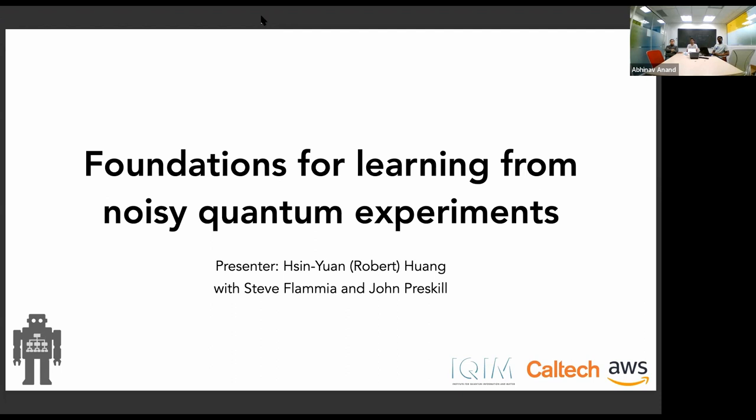Robert is currently a PhD student at Caltech, working with John Preskill and Thomas Liddick. His research focuses on understanding how theory of learning can provide new insights into information and quantum computing. Some of his recent work includes understanding classical shadow tomography for large-scale quantum systems and efficient machine learning algorithms for solving quantum many-body problems.